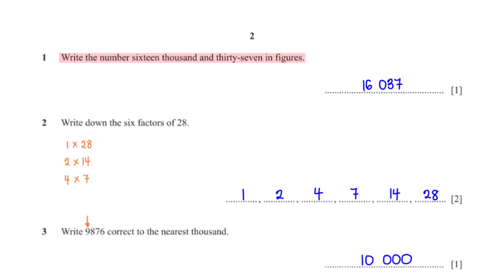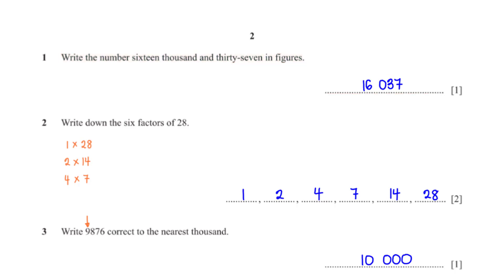Write the number 16037 in figures. Here is the number written in figures. To confirm this number you can type 16000 plus 37 into your calculator. Write down the six factors of 28. To get the factors of 28,